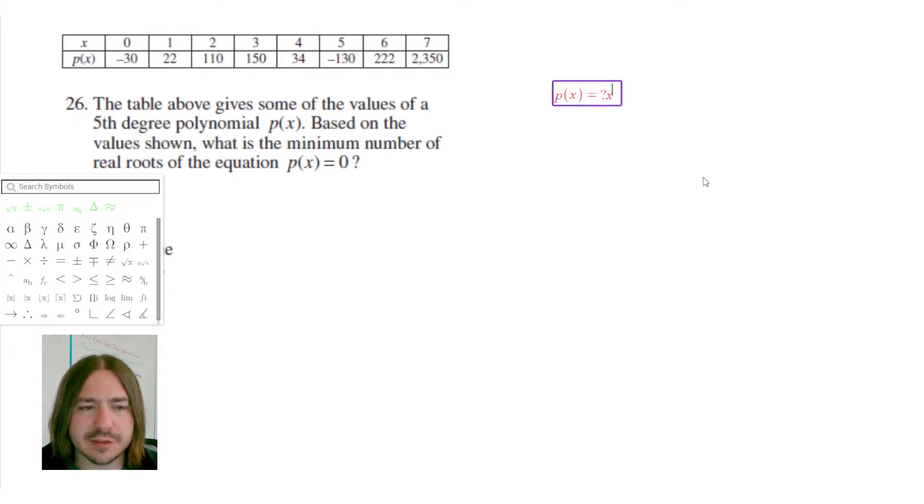That would be like the first term. So we've got like something times x to the—did I say cubic? I meant to the fifth. A fifth degree polynomial. And then there might be some other terms too. We don't know that, but we at least know that there is going to be a quintic term, not a cubic term.